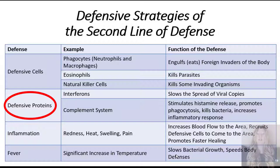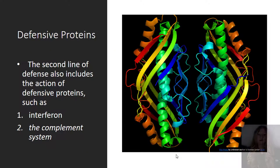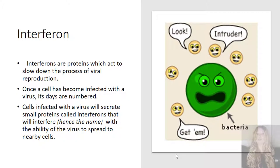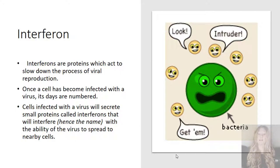In addition to defensive cells, the body's second line of defense also has defensive proteins. These defensive proteins include interferon and the complement system. Interferons are proteins which act to slow down the process of viral reproduction. Once a cell has become infected with a virus, its days are numbered. Cells infected with a virus will secrete small proteins called interferons. The interferons will interfere — hence the name — with the ability of the virus to spread to nearby cells.